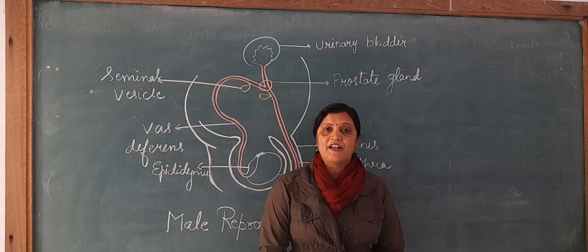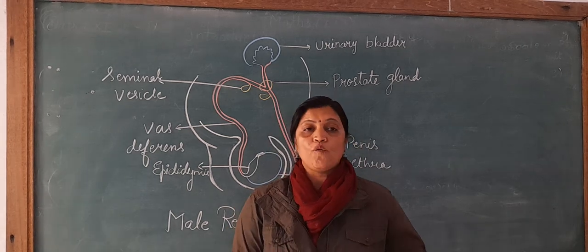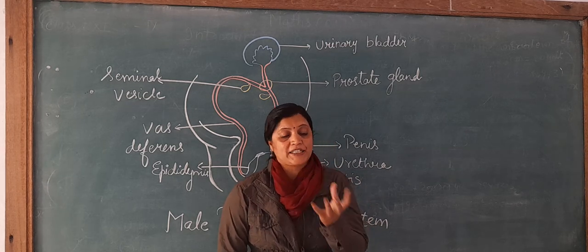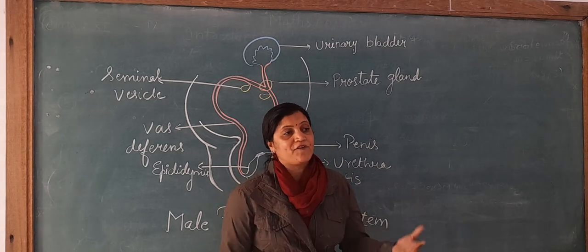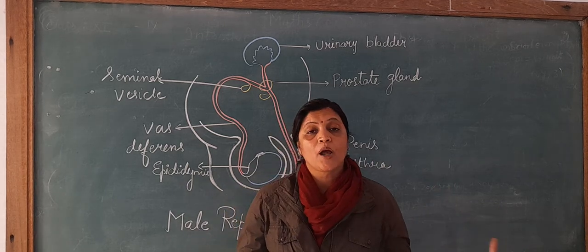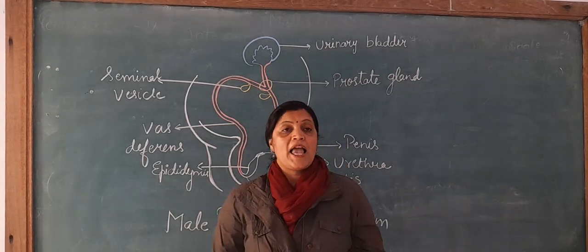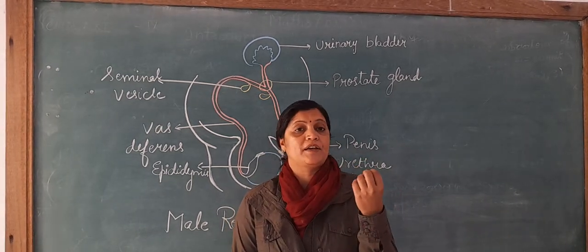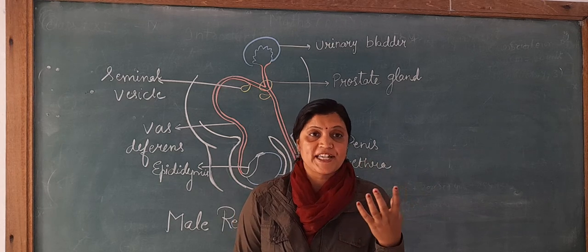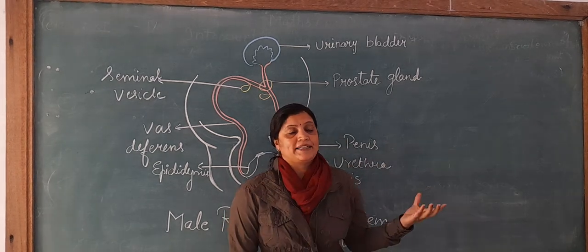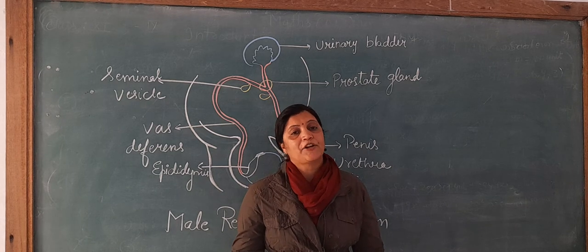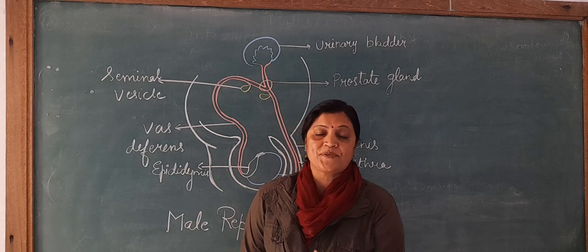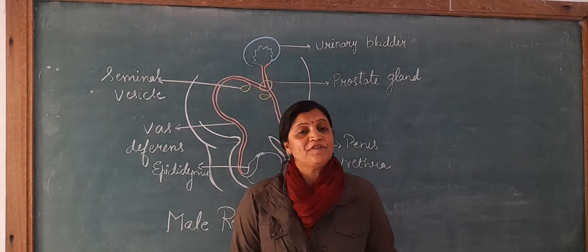Testosterone hormone develops secondary sexual characters in males. The boys become more muscular and heavier, their shoulders become broader, more muscles develop, and hair starts to appear on the face. These are the changes which we can observe in boys as secondary sexual characters.